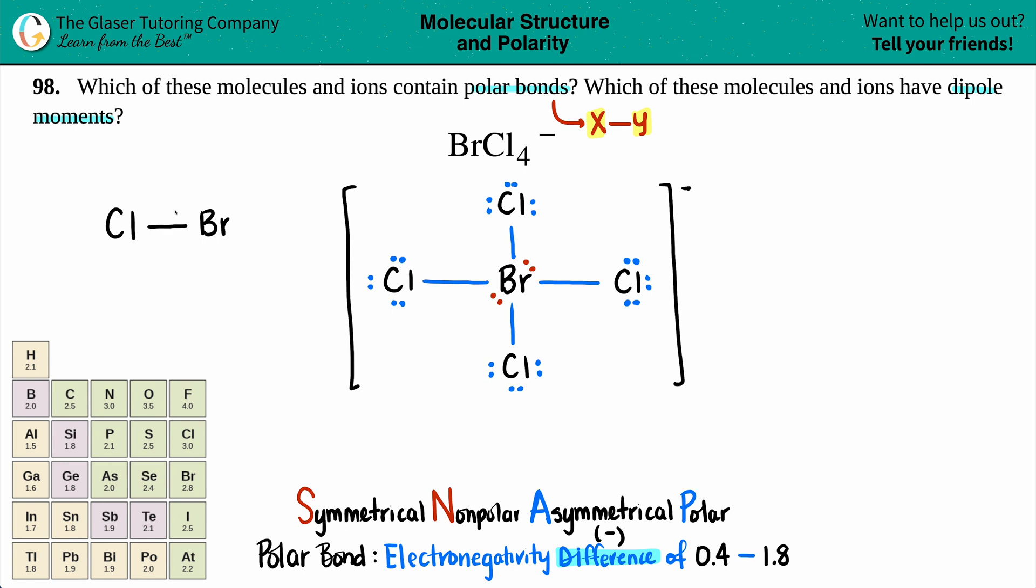I'm going to get those electronegativities. Chlorine is 3.0 and bromine is 2.8—super close. When taking your electronegativity difference, your answer should always be positive, so take the higher number and subtract the lower number. 3.0 minus 2.8 is 0.2.